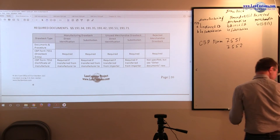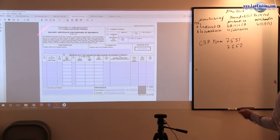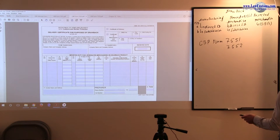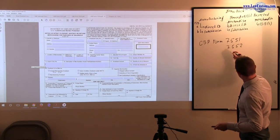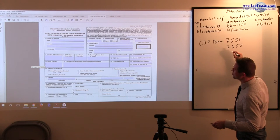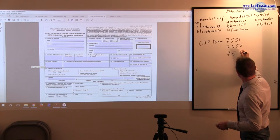7552, which is a Certificate of Manufacturing Delivery reproduced over here. And another form which is relevant for our drawback discussion is Notice of Intent to Export or Destroy the Merchandise, 7553.